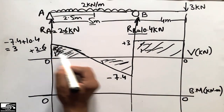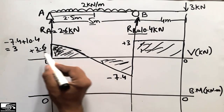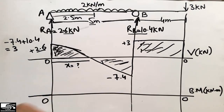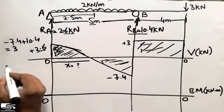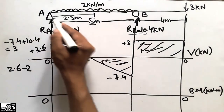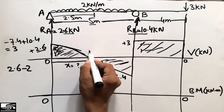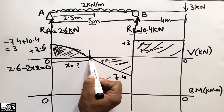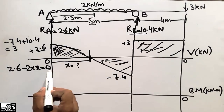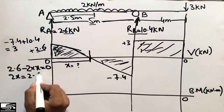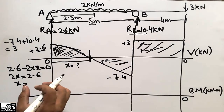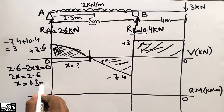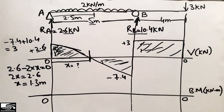Looking at the first triangle: its height is 2.6 while the total base is 5 meters, but we don't know exactly where the shear force crosses zero — that distance is x. Since 2.6 is acting upward and the UDL of 2 kilonewtons per meter acts downward, we set 2x equal to 2.6. Solving: x equals 1.3 meters.